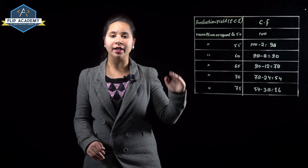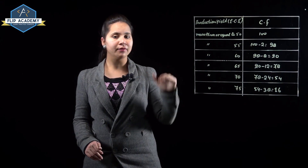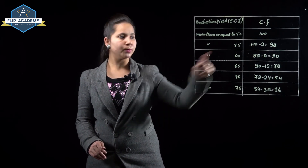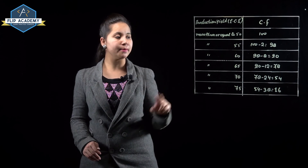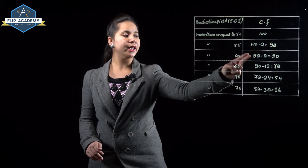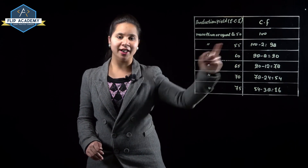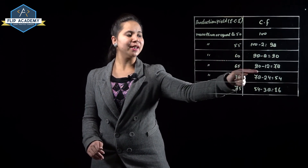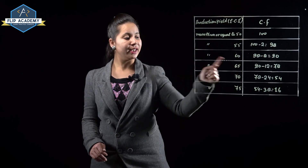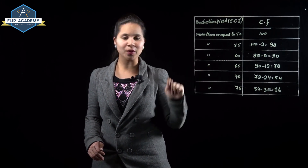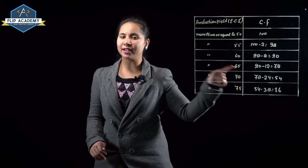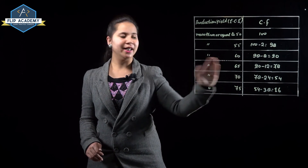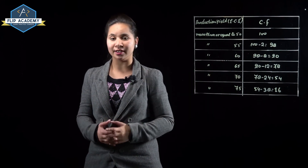For more than type cumulative frequency, we subtract each frequency from the previous cumulative total: 100 − 2 = 98, 98 − 8 = 90, 90 − 12 = 78, 78 − 24 = 54, 54 − 38 = 16.